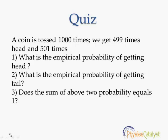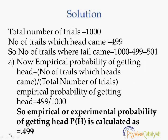So let us look at the solution. From the empirical probability formula, we know that empirical probability is given as the total number of trials where the outcome occurred divided by the total number of trials. Here the total number of trials is equal to 1000 and number of trials where head came is equal to 499.